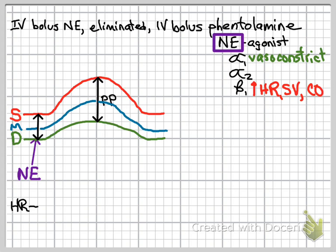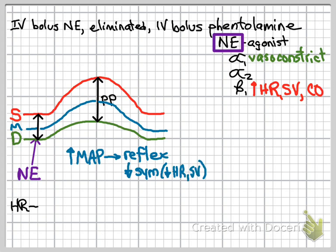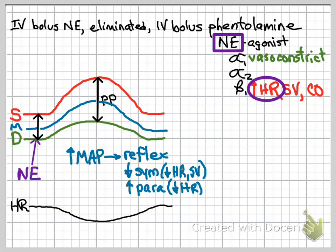The mean arterial pressure will rise during this time, and as a result, you're going to see reflex activation: a decrease in sympathetic activity resulting in decreased heart rate and contractility, and an increase in parasympathetic activity, which will manifest as a decrease in heart rate. So as we monitor heart rate, we will see a decrease. However, it's not as much as you would expect, because norepinephrine has beta-1 agonist effects directly stimulating heart rate. Reflex decreases in heart rate due to parasympathetic activation are counteracted by the beta-1 action of the drug.